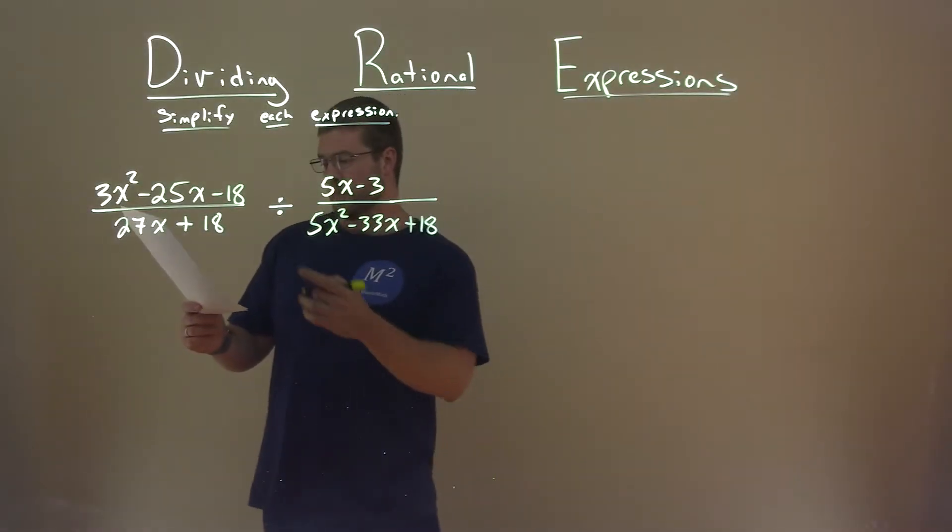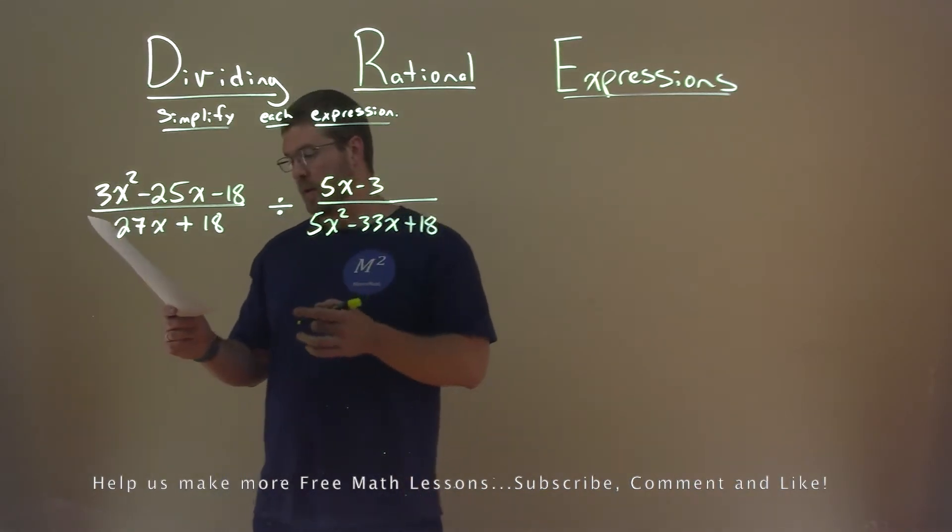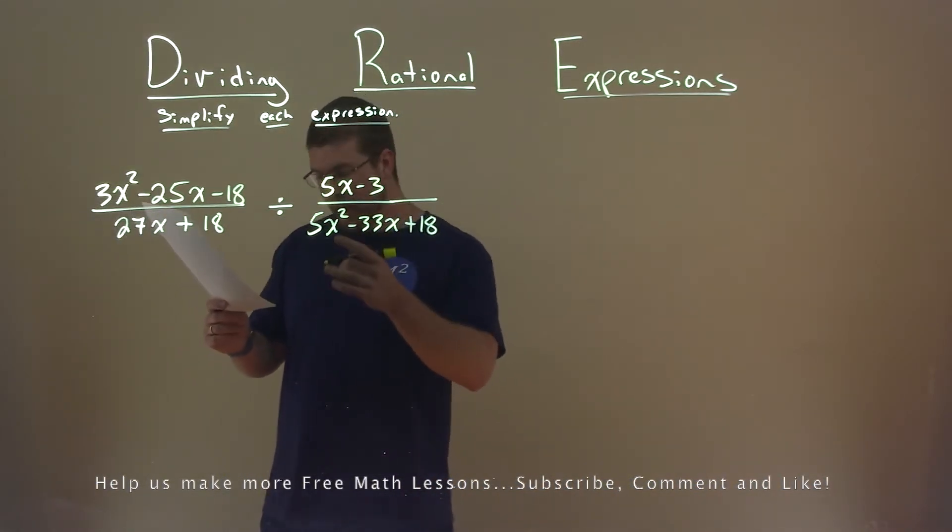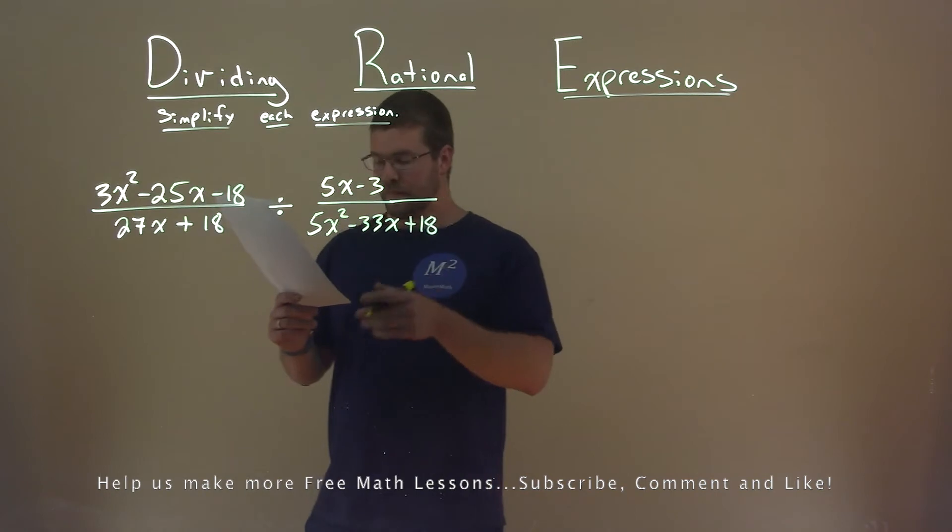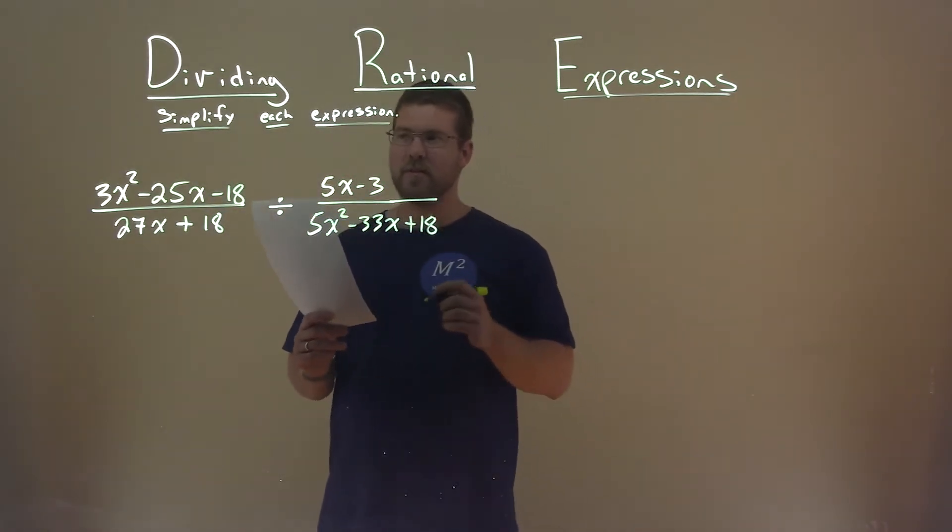We're given this problem right here: 3x squared minus 25x minus 18 over 27x plus 18, divided by 5x minus 3 over 5x squared minus 33x plus 18. And we need to simplify this expression.